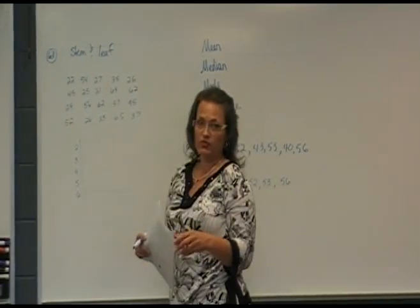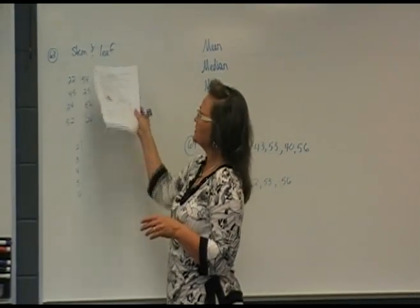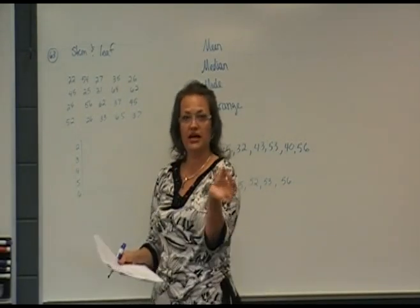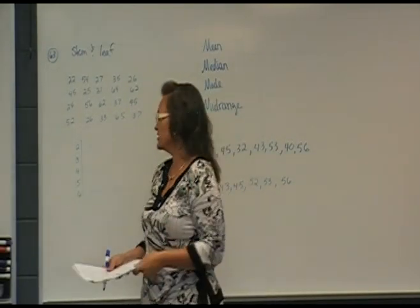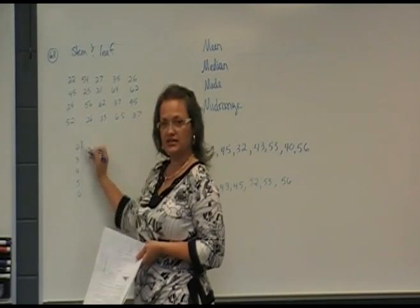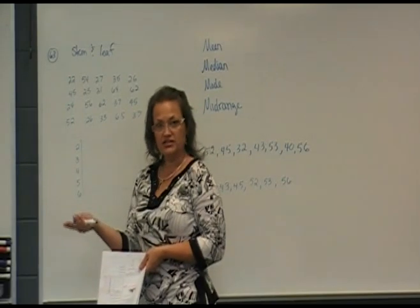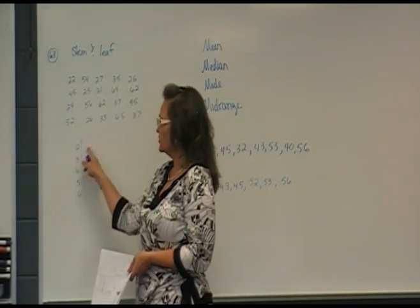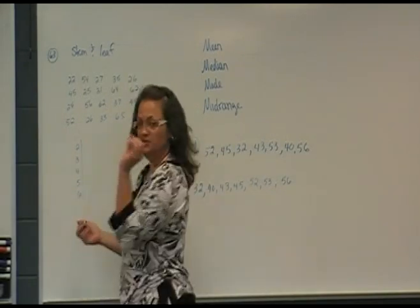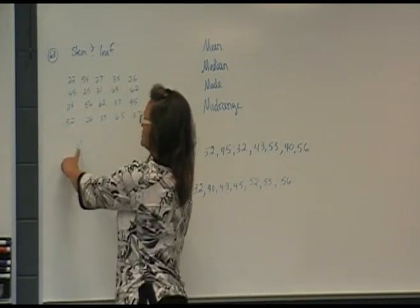Number 63, another type of graph that you can see is a stem and leaf. Now this one's a little more specific because we actually can see every piece of data in a stem and leaf. So I kind of like this. So we've got two, three, four, five, and six down. Those would be our stem, our base numbers. And then we're going to put the leaves along side of that. And that will help us count up how many, but in a specific way.